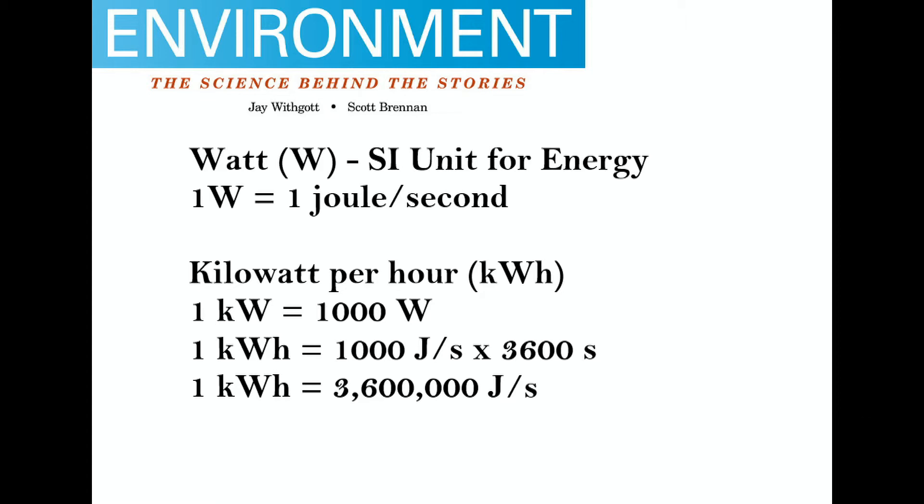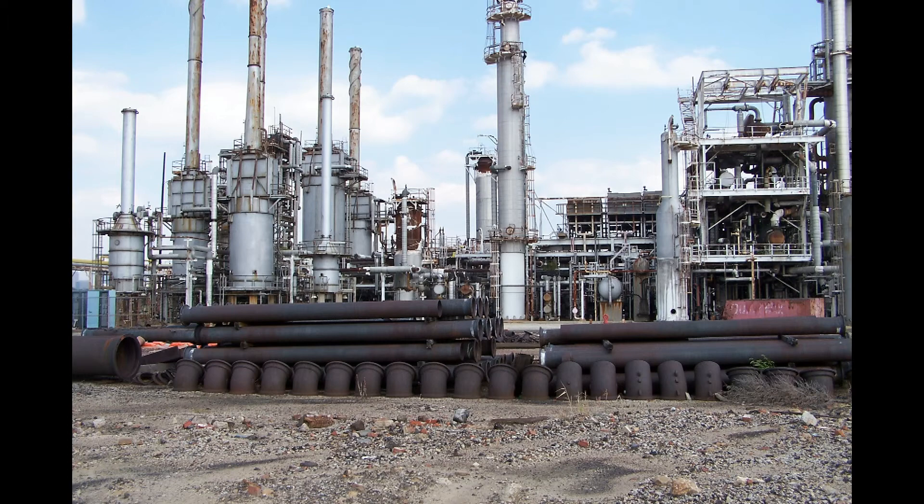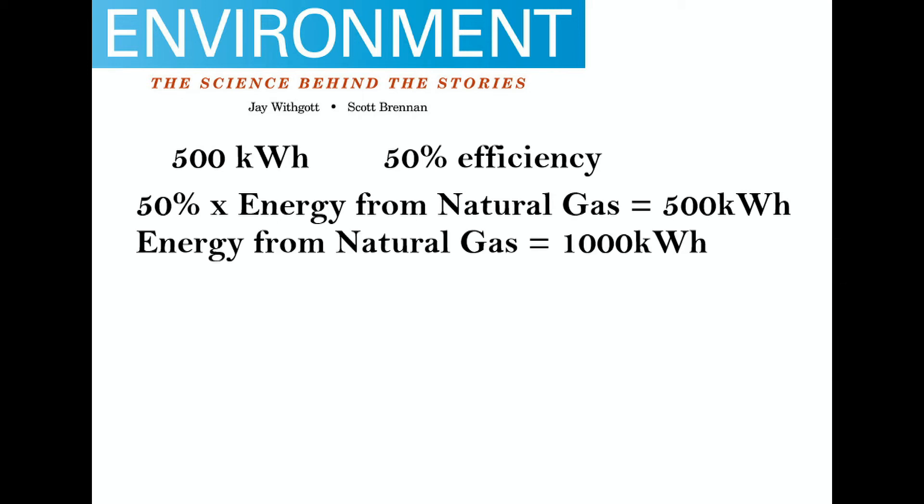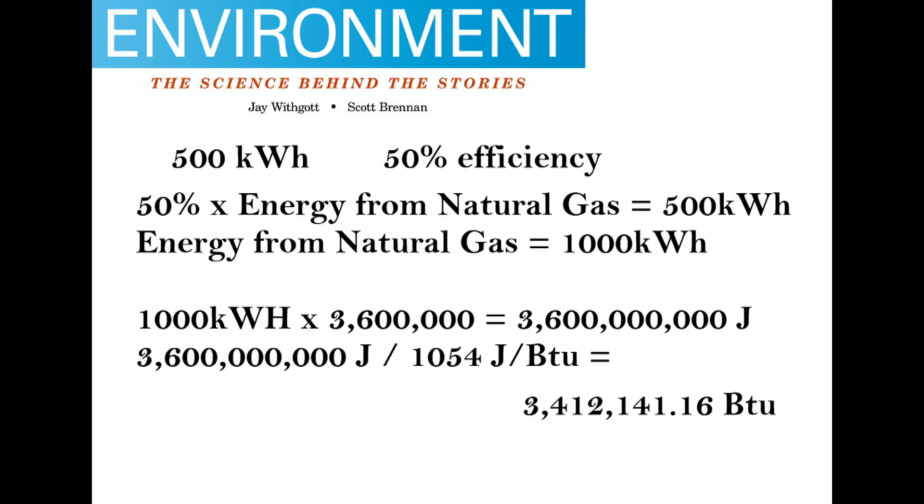All that we just talked about can be used to calculate practical things. For example, how much natural gas is needed to power a natural gas plant? Suppose the plant is 50% efficient and generates 500 kilowatts per hour of energy. That means only half that energy of the natural gas is actually conserved. So the natural gas is actually worth about a thousand kilowatts per hour. Now convert that into joules and then to BTU, and now you can just divide that number by the heating value of the particular gas which will be given to you.